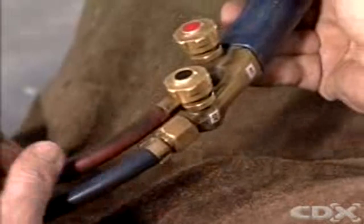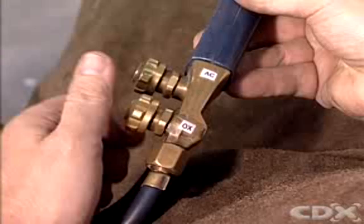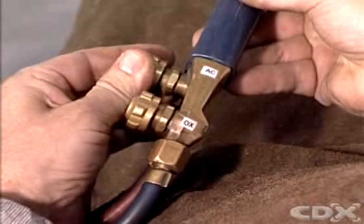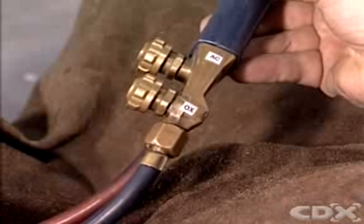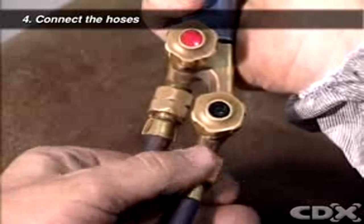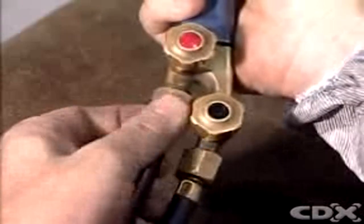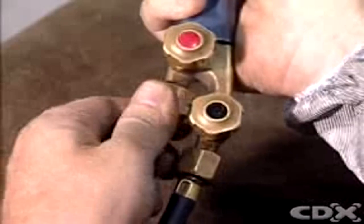Examine the connections. One connection is marked OX and is for the oxygen hose. The other is marked AC and is for the acetylene hose. As a further safety precaution, you'll find the oxygen connector is right-hand thread and the acetylene connector is a left-hand thread.